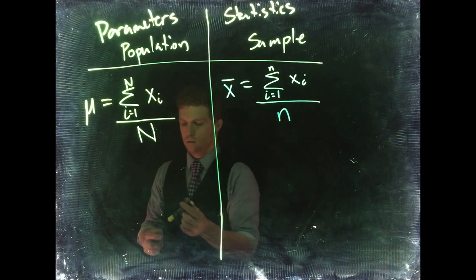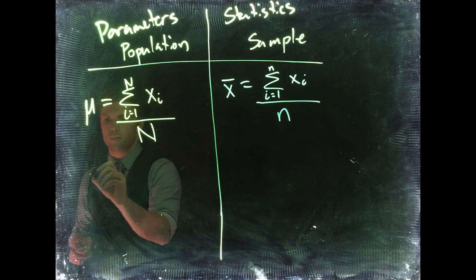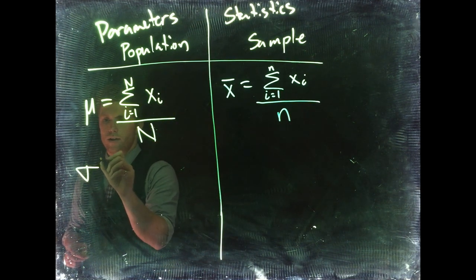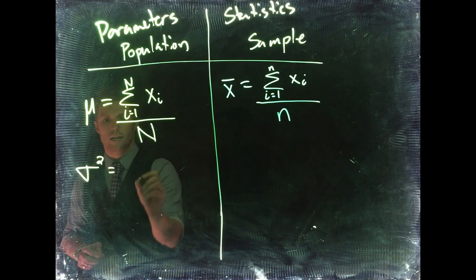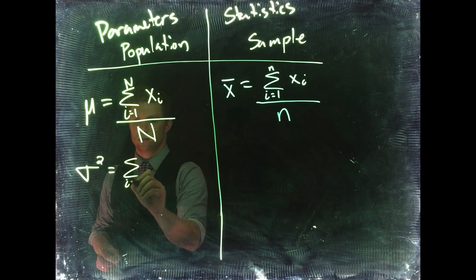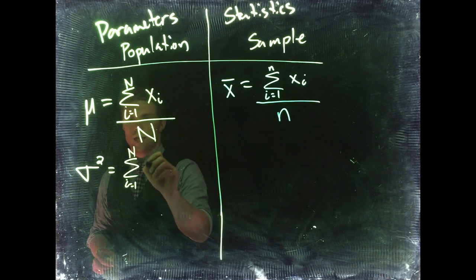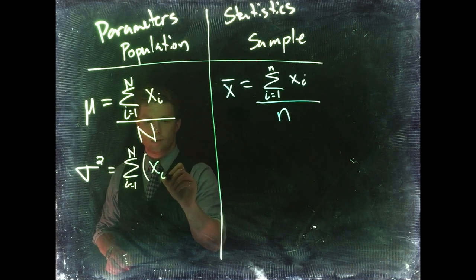Let's keep on with this idea and talk about the variance. The variance is written with sigma squared (σ²) and it equals - back to our summation notation - i equals 1 to N. Now we get a little complicated.